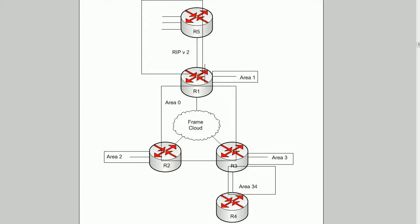Let's go ahead and bring the study guide up for the NP Route. What we've got here is a RIP domain running between routers 1 and 5, and everything else here is OSPF. I've already performed route redistribution on router 1. We've got OSPF between routers 1, 2, and 3 in area 0, and each router has its loopback in a separate area. We also have an area 34 down here between routers 3 and 4.